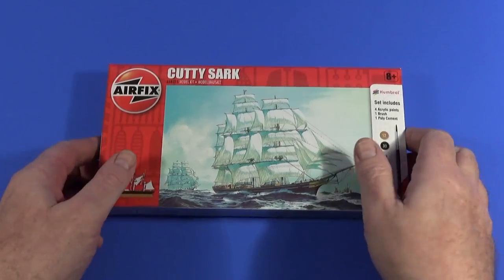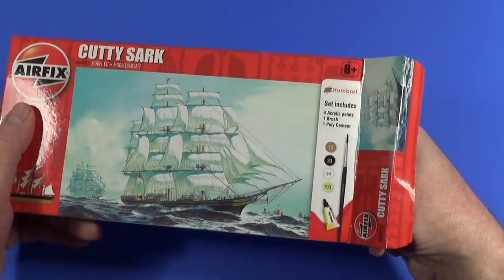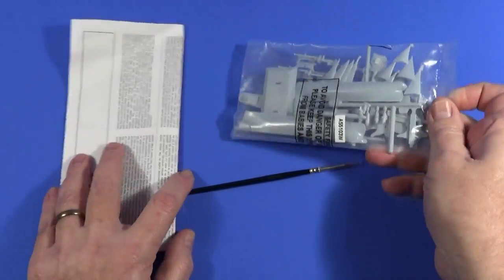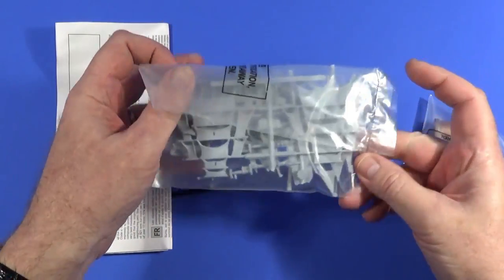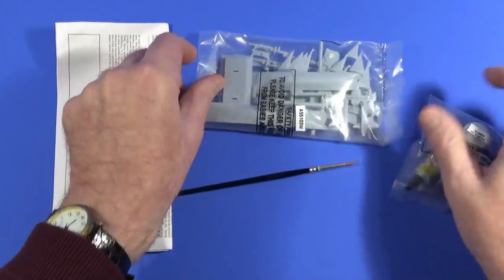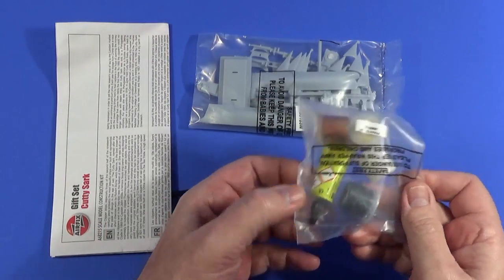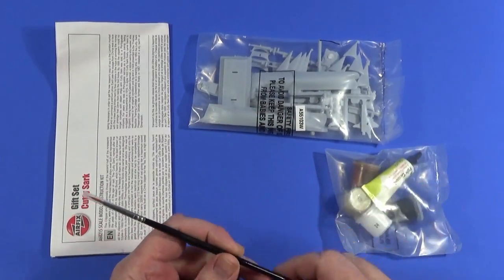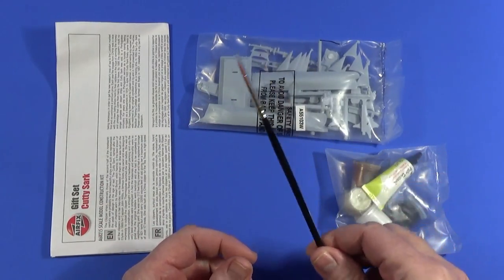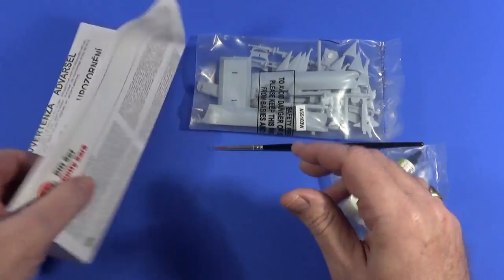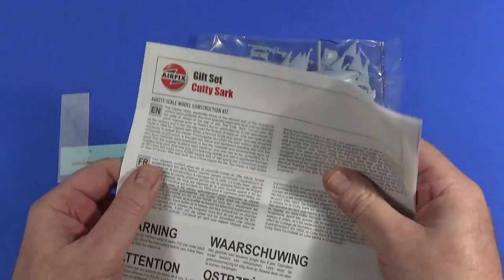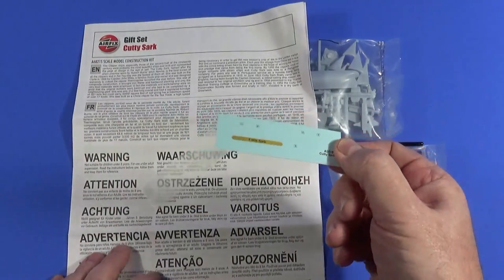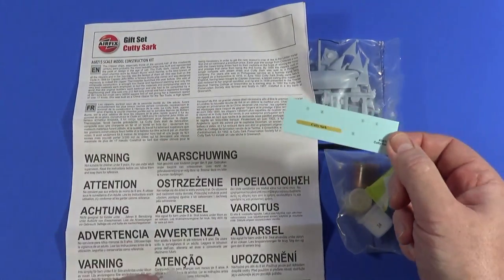Okay so let's have a look and see what we get in the box. So we get a bag with the parts, there's really not that many parts so the bag's quite small. We get another bag with some glue and four pots of paint. We get a Humbrol number two paintbrush, general purpose paintbrush and we get the instruction sheet. And finally hidden away in the instruction sheet quite often is the sheet of decals or transfers as we used to call them.